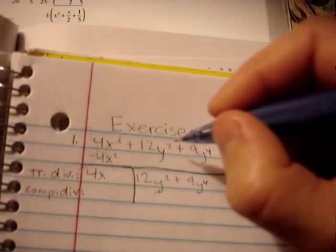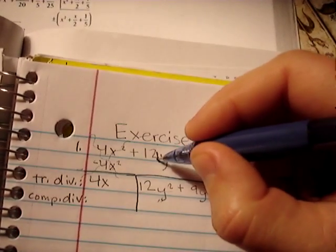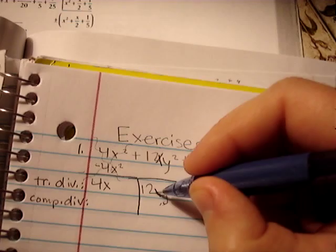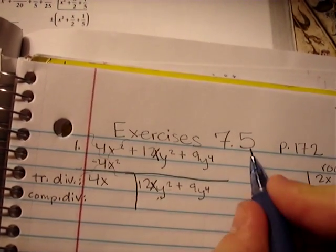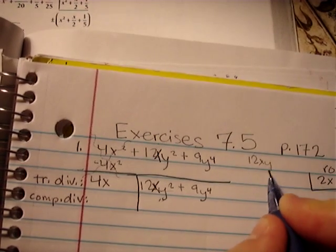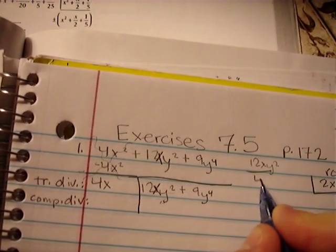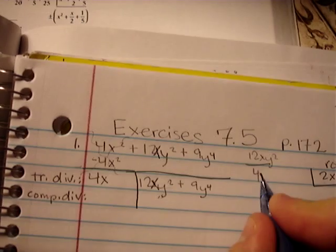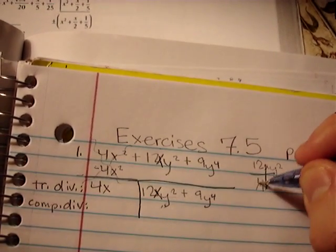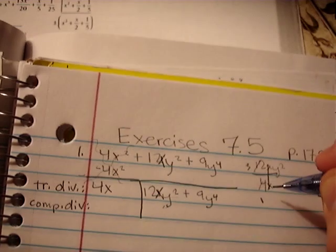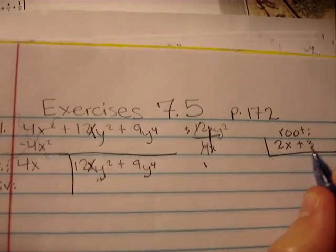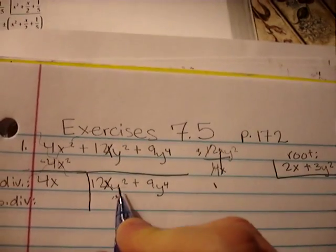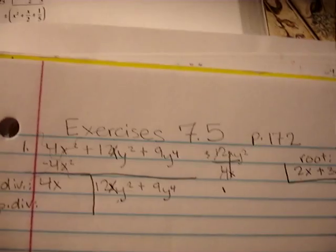So 12y squared divided by 4x is going to be 3... Oh, sorry. I don't know why I didn't have an x in there for my visual problem. 12xy squared divided by 4x. There was an x in the original. Well, the x's will cancel. The 4 will go one time, 3 times. That is 3y squared. That is my next term, and it's a positive term because this was positive, this was positive. There were no negative signs involved.